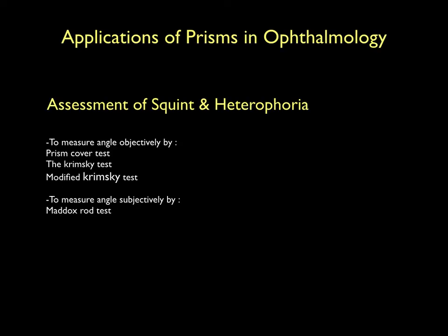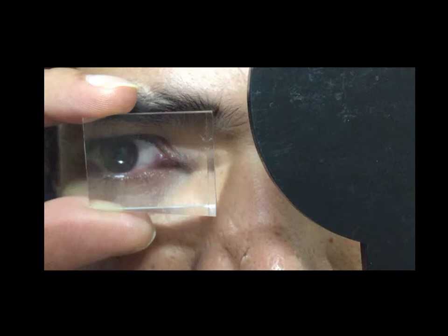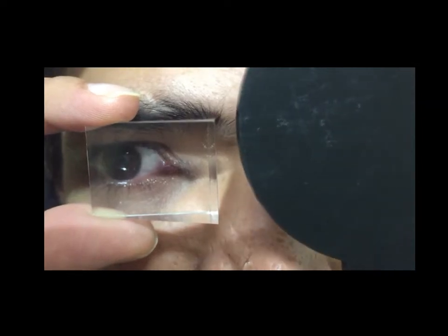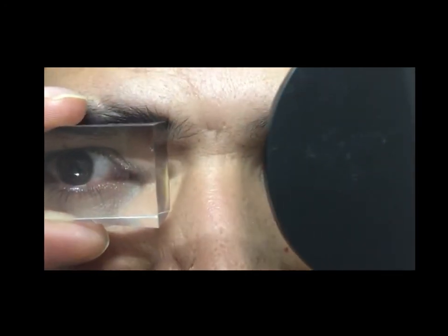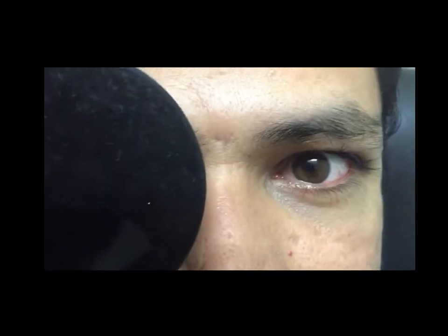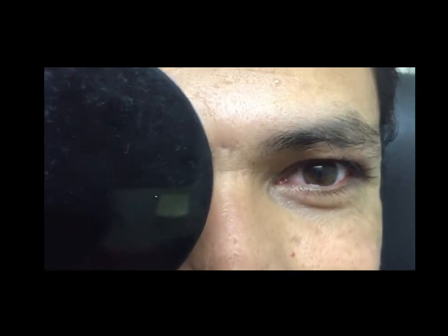Loose prisms or prism bar are used for measuring angle of deviation objectively, whereas a Maddox rod can be used to measure the deviation subjectively. This is a video showing an alternate cover test using a loose prism.